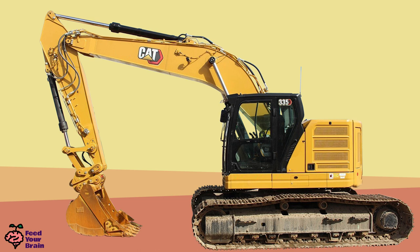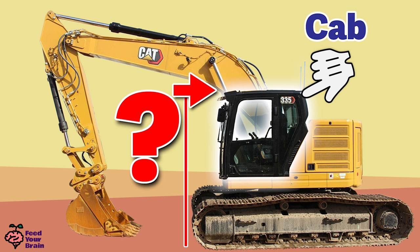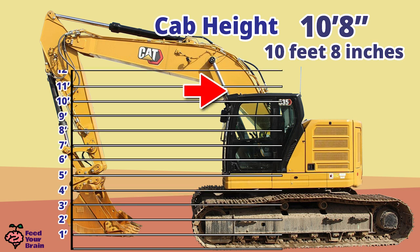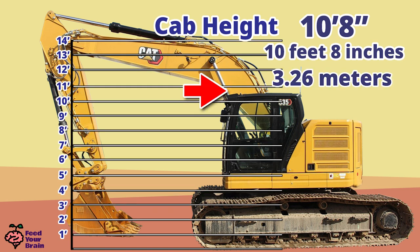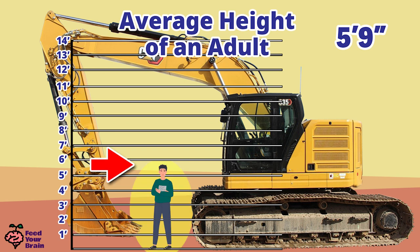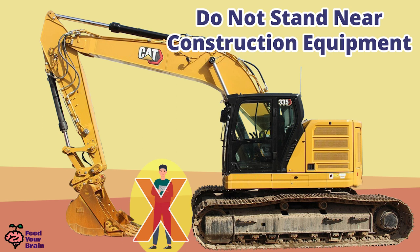Now we know the height of the cab. This model number 335 has a cab height of 10 feet 8 inches tall, which is also 3.26 meters. The average height of an adult is 5 feet 9 inches tall. This is how tall an average person would be standing next to this excavator — for illustration purposes only. You never want to stand next to or get near any construction equipment unless you are a trained and authorized professional.